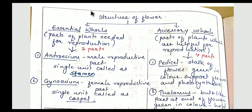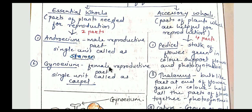The parts of the flower which are actually involved in the reproduction process are called the essential whorl. The parts which are not directly involved in reproduction but somehow help in reproduction and do other functions of the plant are called the accessory whorl. The essential whorl has two parts: Androecium, which is the male reproductive part, and its single unit is called a stamen.